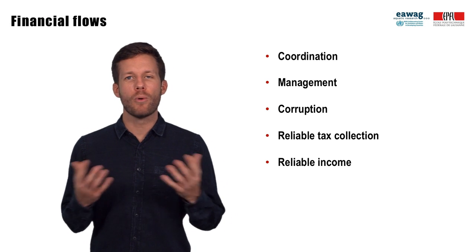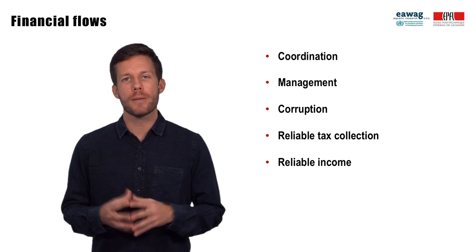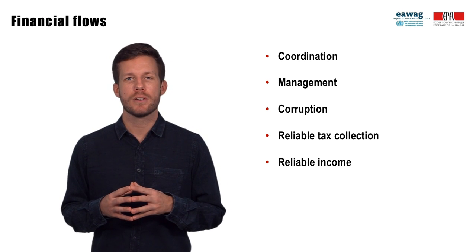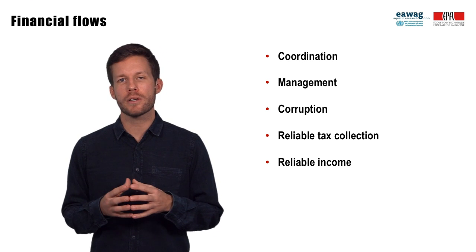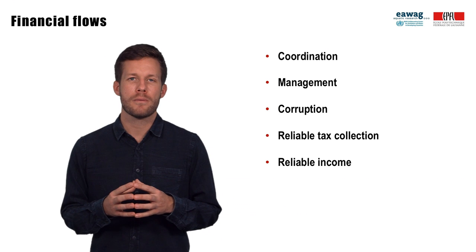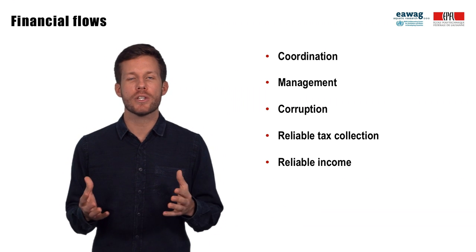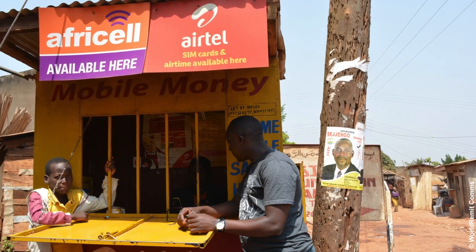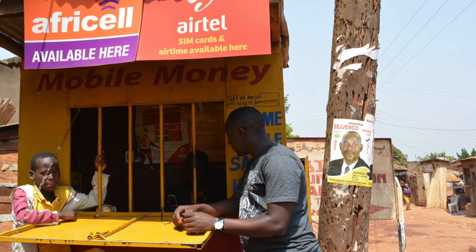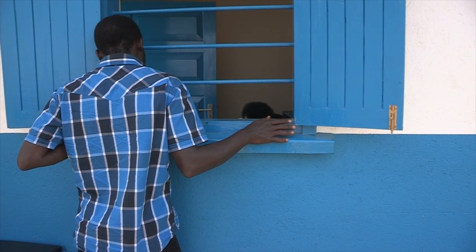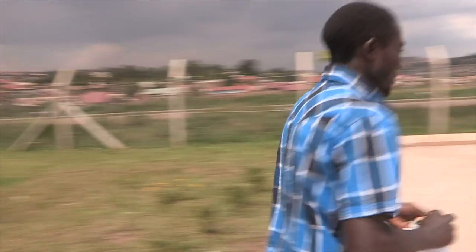As you can see, the model has become more complex and includes more stakeholders. Reliable implementation of a financial flow model with more stakeholders requires good coordination and management. Such a model could be prone to corruption and relies on reliable tax collection, which can be challenging especially in urban poor areas. However, a sanitation tax can provide a reliable income stream for the public utility needed for reliable operation and maintenance of the treatment plant. One tool to manage this complexity is making financial transfers electronic — for example, with phone-based money transfer. At the treatment plant in Kampala, collection and transport service providers pay the discharge fee by transferring money via mobile phone to the utility's account, so no cash is handled.